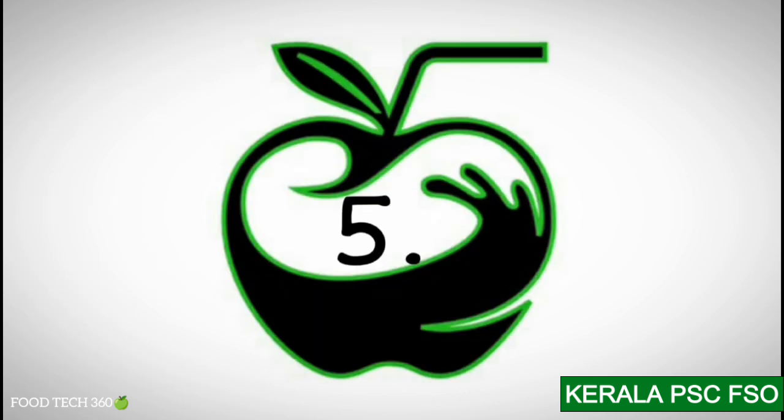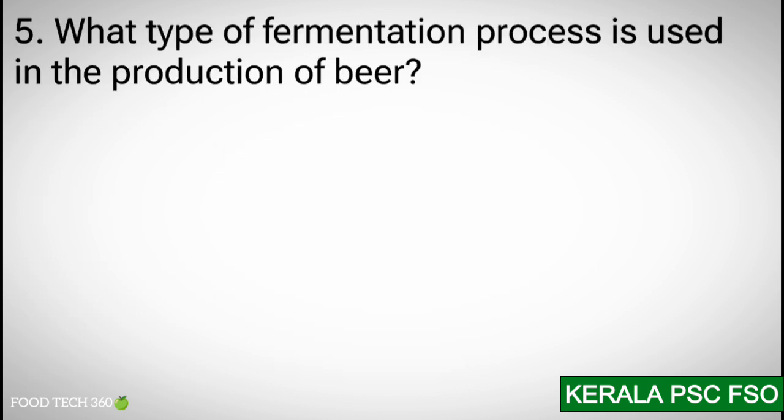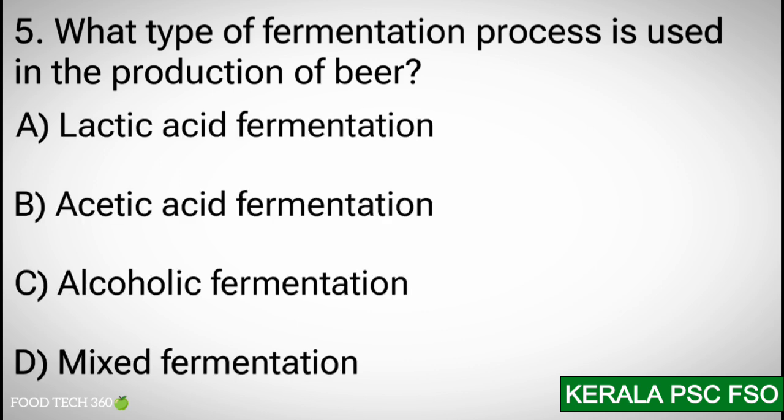Q5. What type of fermentation process is used in the production of beer? A) Lactic acid fermentation. B) Acetic acid fermentation. C) Alcoholic fermentation. D) Mixed fermentation.